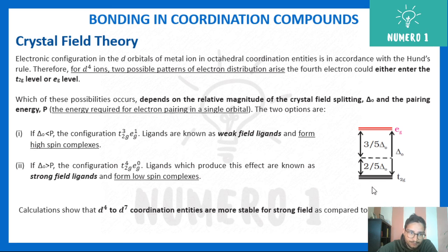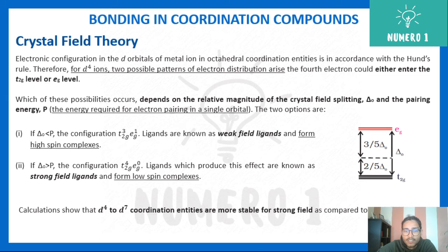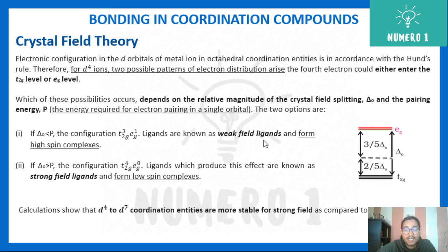Calculations show that d4 to d7 coordination entities are more stable for strong field ligands compared to weak field cases. So the difference between strong and weak field ligands depends on the splitting energy delta_o and the pairing energy P.